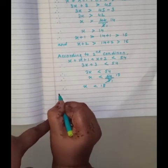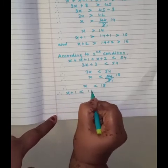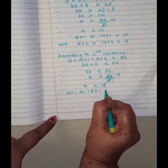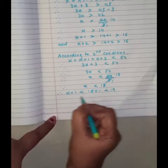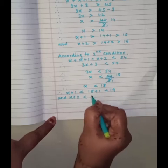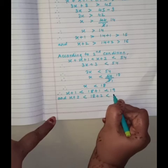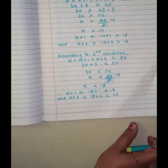And in this case, X plus 1 is 18 plus 1 is 19. And X plus 2 is less than, that means 18 plus 2 is less than 20.